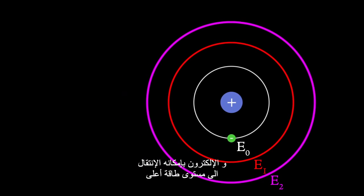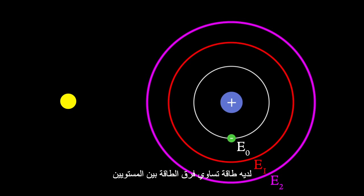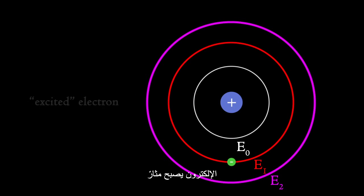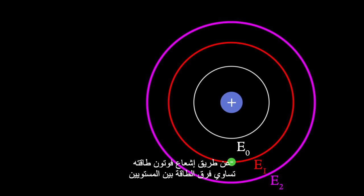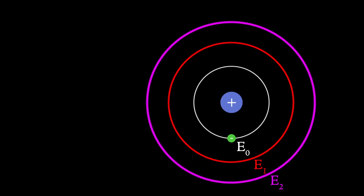An electron can be excited to a higher energy level by absorbing a photon whose energy is equal to the energy difference between the levels. The electron is said to be excited. However, after a very short time, the excited electron will go to the lower energy level by emitting a photon equal to the energy difference. This is called spontaneous emission.